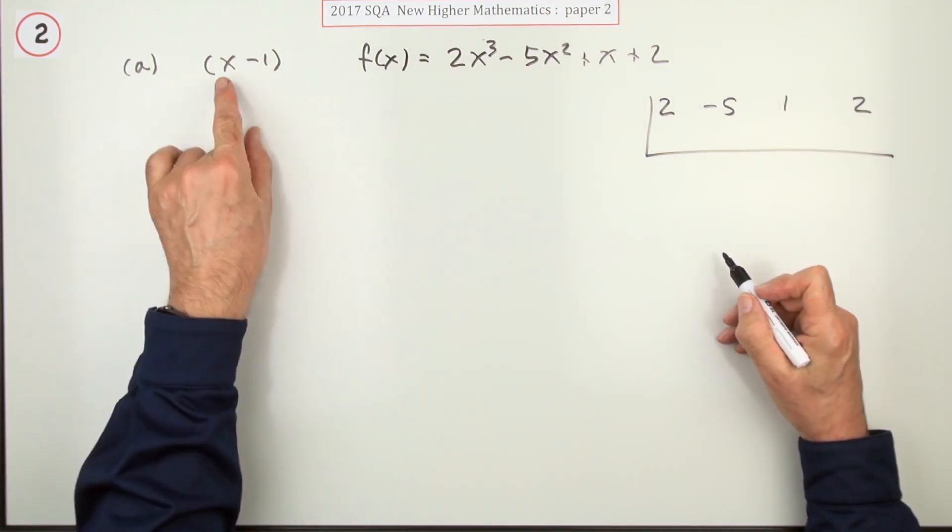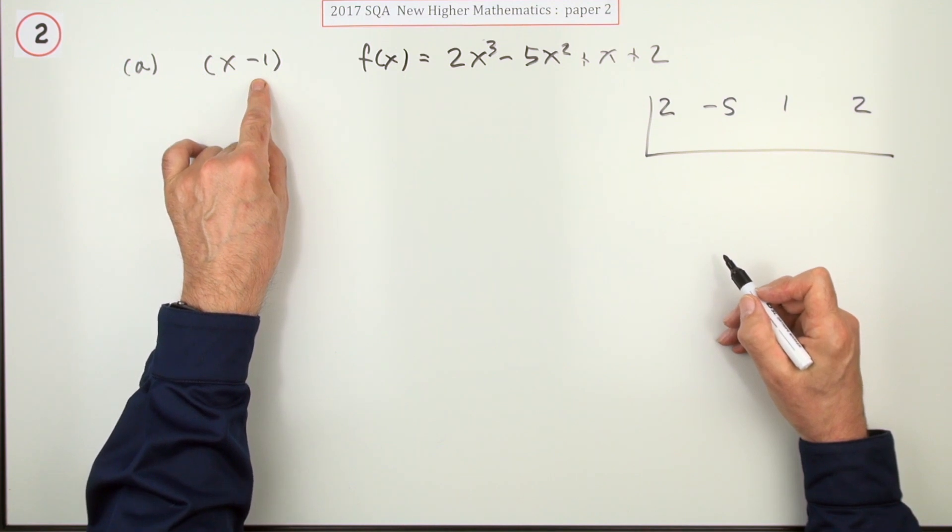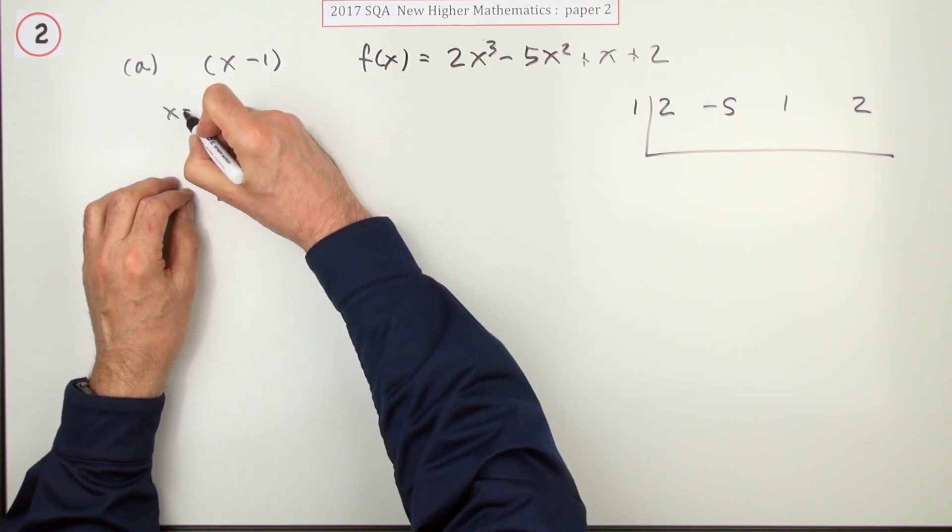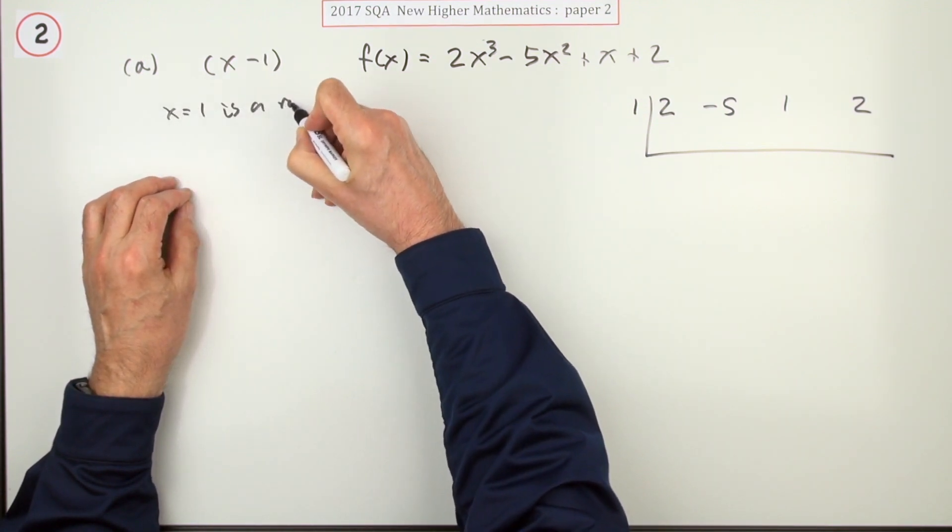So I'll just put down these coefficients, making sure they're all there, and they are all there. If x minus one is a factor, that means x equals one is a root.